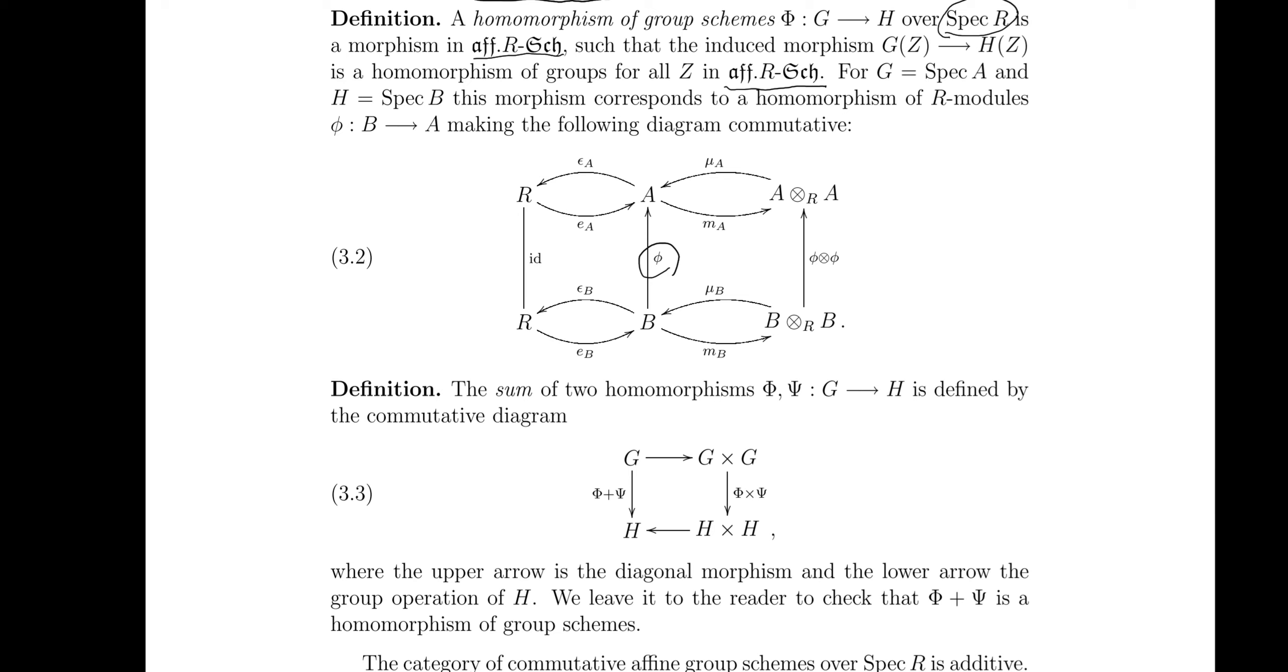The homomorphism group scheme - last time we stopped here. Surely it has to be a morphism in the category of finite group schemes, compatible with the morphism to spec R, but it's not enough. There's a moral condition such that the induced morphism is the homomorphism of groups for all A in this category. What does this mean?